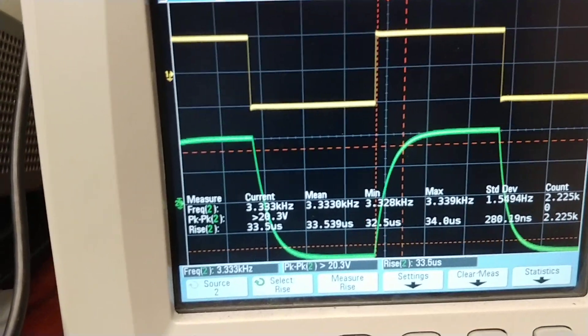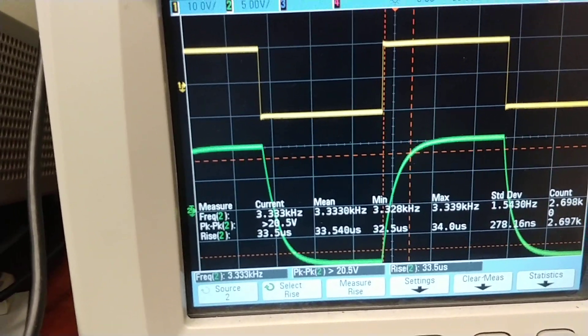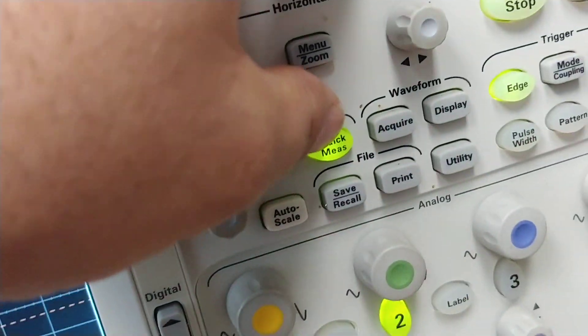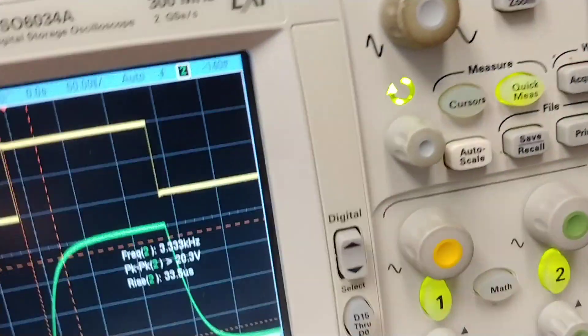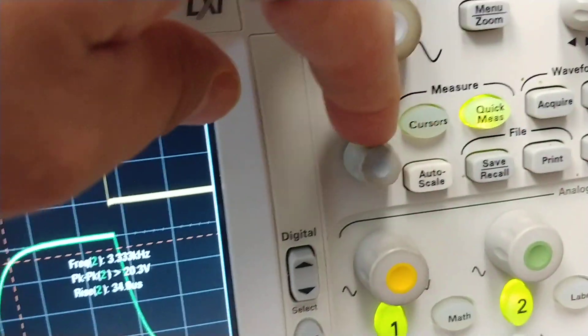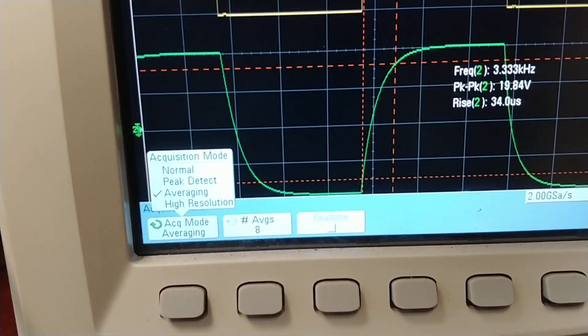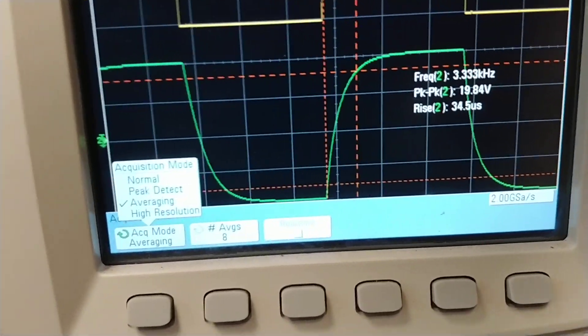Sometimes you need to average out the noise a little bit. If you go and press acquire and then use that same selection button, we can use averaging to filter out the noise.